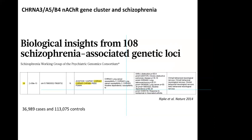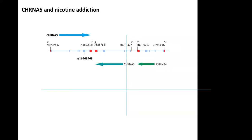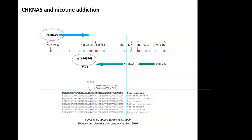A major genome-wide association study has identified 108 schizophrenia-associated genetic loci, among them the gene cluster containing the alpha-3, alpha-5, and beta-4 genes coding for nicotinic acetylcholine receptor subunits. This same gene cluster is associated with risk for habitual smoking. Among the most notable polymorphisms is RS16969968 — which I will call the alpha-5 SNP — that leads to a substitution of aspartic acid to asparagine at position 398 of the human alpha-5 subunit.